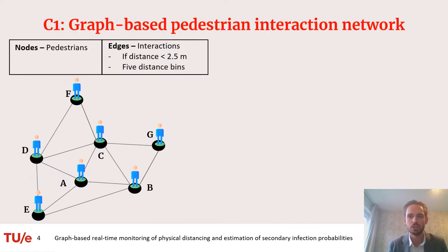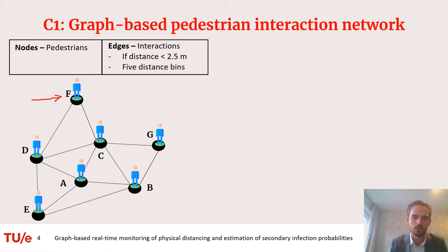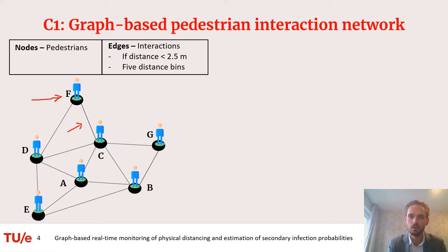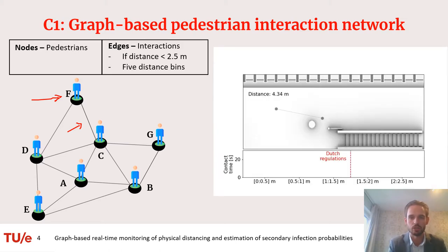In order to deal with this challenging complexity, we propose to use a graph-based pedestrian interaction network. In this network, we store the pedestrians on the nodes and we store the interactions between pedestrians on the edges. To keep this tractable, we propose to only make an edge if the distance is lower than a certain threshold — in our case, 2.5 meters. The distance statistics on these edges is also quantized, and in our case we used 5 distance bins to store the interaction.